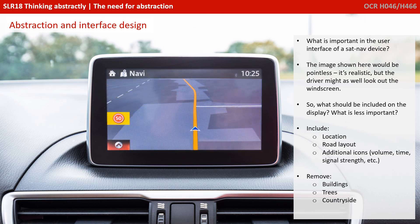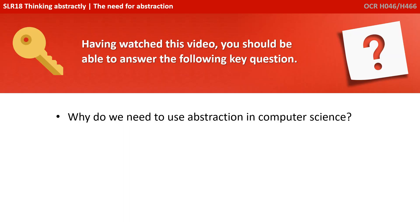You can see we've chosen to highlight or accentuate the car's location, the road layout, and we've added additional icons for the volume and the time. We've removed unnecessary distracting detail like additional buildings, trees and the countryside. Having watched this video, you should be able to answer the following key question: why do we need to use abstraction in computer science?